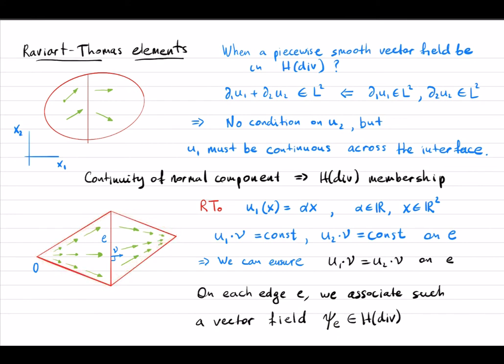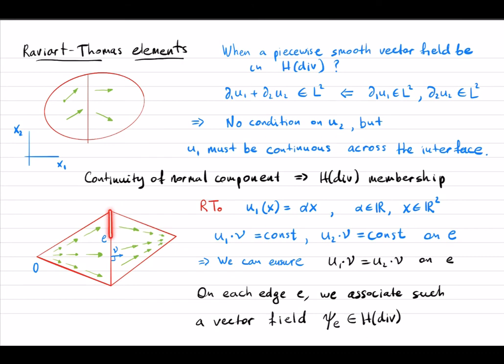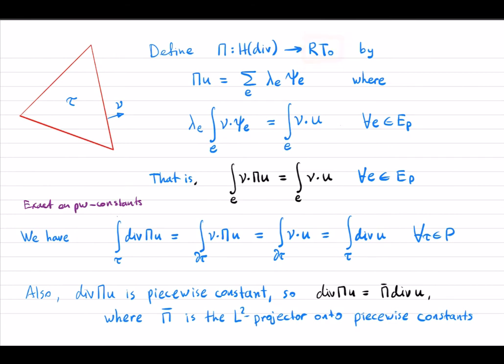The resulting vector field is globally in H(div) because it has no normal component along the outer edges — it is completely tangential there — and the normal component is continuous across the internal interface. We associate to each edge such a vector field, which plays the role analogous to hat functions, giving one degree of freedom per edge. This defines the Raviart-Thomas finite element space.